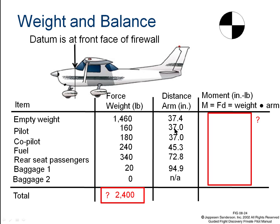Computing the moments: 1,460 × 37.4 = 54,604 inch-pounds; pilot = 5,920; co-pilot = 6,660; fuel = 10,872; rear seat passengers = 24,752; baggage = 1,898. Adding all moments gives a total of 104,706 inch-pounds, with a total gross weight of 2,400 pounds. The second baggage location has zero weight, so it contributes nothing.